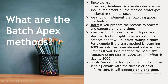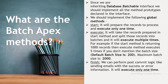If you don't mention the batch size, the default batch size will be 200 and the maximum batch size will be 2,000. The finish method is used to perform post-commit logic, like sending emails with success or error information, and it executes only one time.